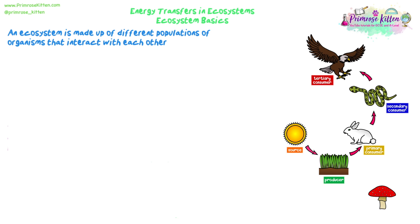Just some recapping — some ecosystem basics, stuff we've all done at GCSE. An ecosystem is made up of different populations of organisms. Remember a population is a group of one species in a habitat or ecosystem, and they interact with each other. Organisms are interdependent, meaning they rely on each other for things like food, shelter, pollination, and seed dispersal.